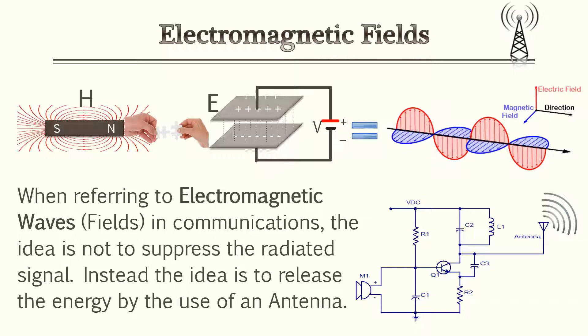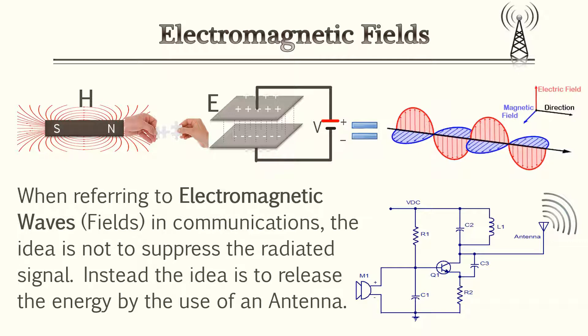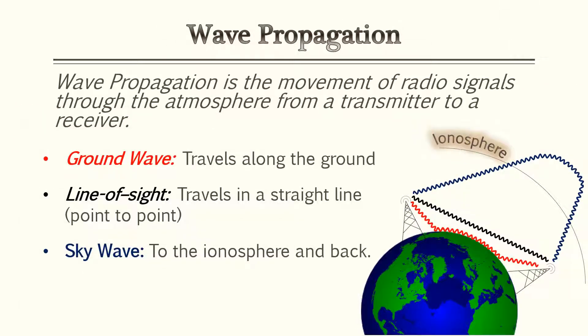Now, electromagnetic fields — when referred to the communication world — the idea is not to suppress the radiated signal. Instead, the idea is to release the energy by the use of an antenna. Anytime you have signals leave an antenna, you have what is called wave propagation.